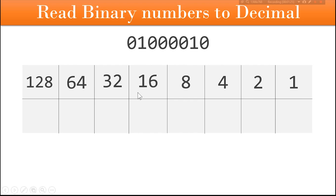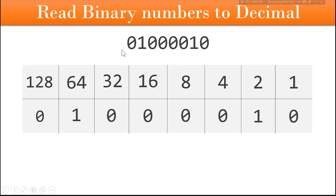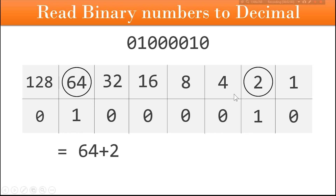Then fill in the index values. These are called index values: 1, 2, 4, 8, and so on — it is just successive multiplication by 2. Now take the binary number and fill it into the second row. Wherever there is a 1, circle the number above it. Here there was a 1 so we circled 64, and here there was a 1 so we circled 2. Then add all the circled numbers — 64 plus 2 equals 66. So this binary number refers to the decimal value of 66.